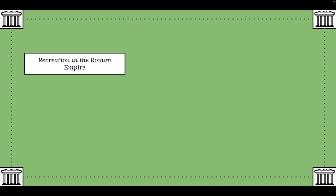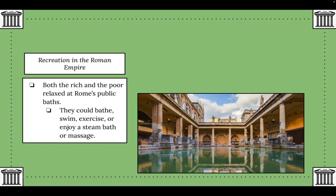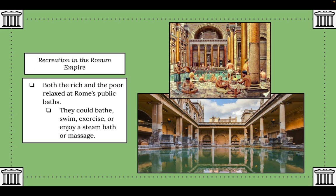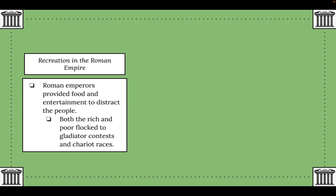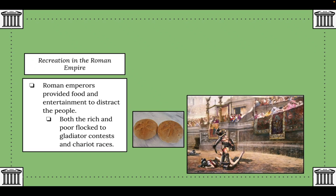For recreation, both rich and poor relaxed at Rome's public baths, where they could bathe, exercise, or enjoy a steam bath or massage. Roman emperors made sure to provide the poor with what is known as 'bread and circuses' — food and entertainment to distract the people. Both rich and poor flocked to gladiator contests in large public arenas like the Colosseum.